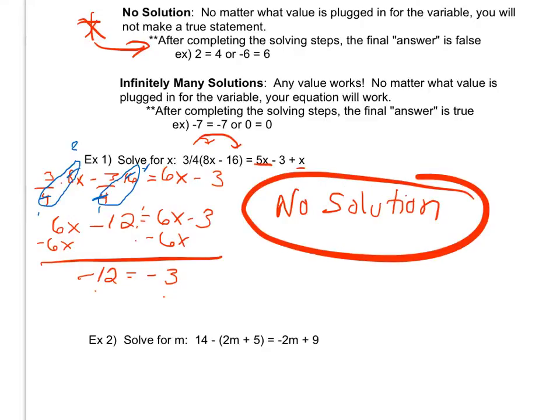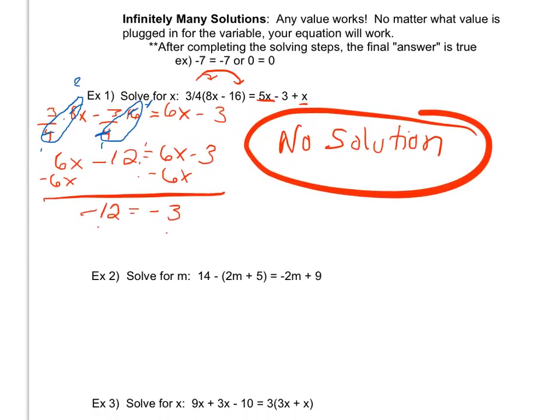Let's look at example 2. I'm going to do kind of the same steps, go through my solving process. I'm going to go ahead and start by seeing that I have a minus sign to distribute, so I'm going to distribute the minus in, giving me 14 - 2m - 5 = -2m + 9.